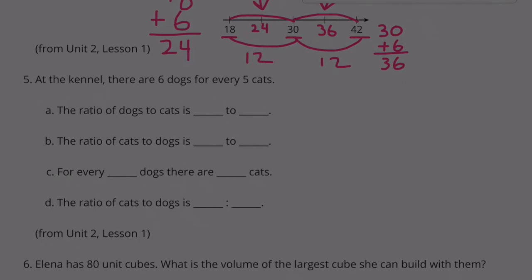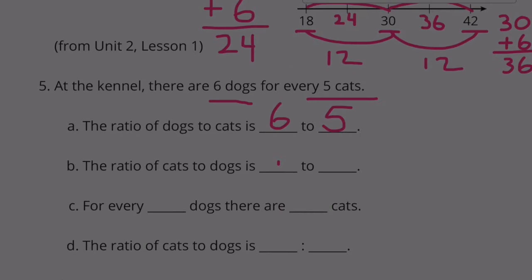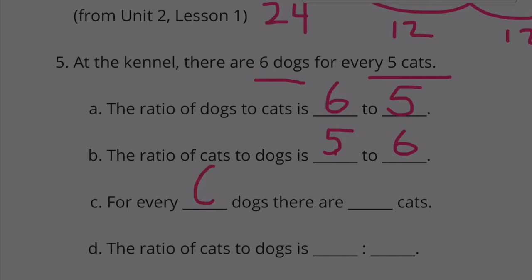Number five: At the kennel, there are six dogs for every five cats. Part A: The ratio of dogs to cats is six to five. Part B: The ratio of cats to dogs. Now they want us to put cats first, so there's five cats to six dogs. Part C: For every six dogs, there are five cats. Part D: The ratio of cats to dogs. Well, that's the same as B: five cats for every six dogs.